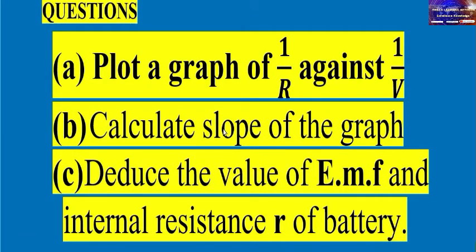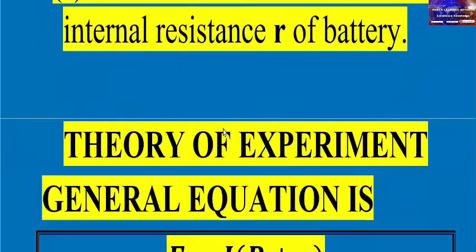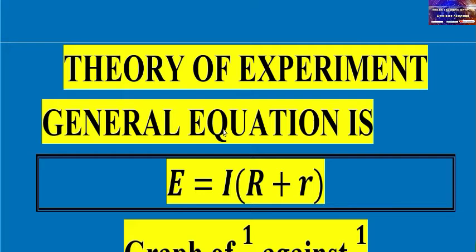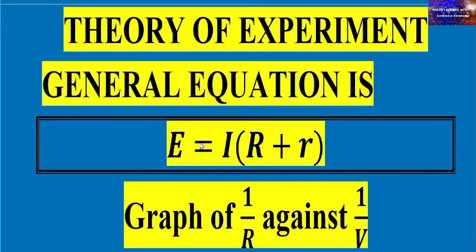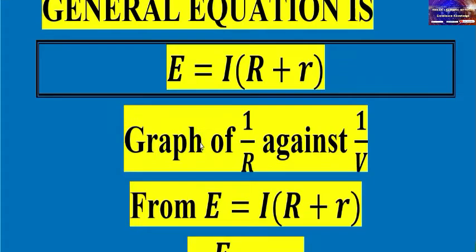Now let's proceed with the theory of the experiment. According to our circuit, we have voltage, internal resistance from the cell, external resistance, and other components. The general equation is: EMF = I(R + r), where R is the external resistance and r is the internal resistance.